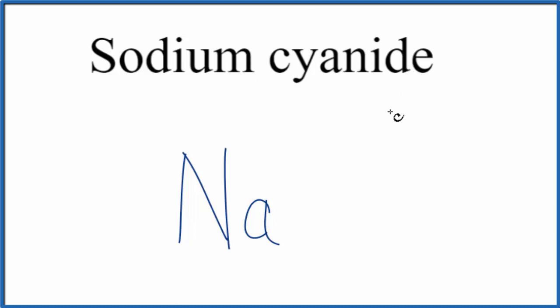For cyanide, you need to look that up on a table of common polyatomic ions, or just to memorize that it's CN, and it has an ionic charge of 1 minus. So the whole CN here has an ionic charge of 1 minus, it's a polyatomic ion.